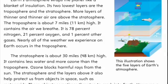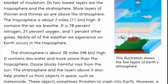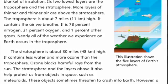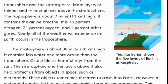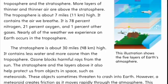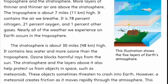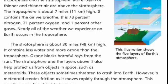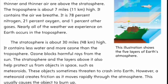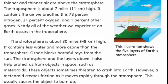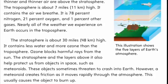The stratosphere is about 30 miles, or 48 kilometers, high. It contains less water and more ozone than the troposphere. Ozone blocks harmful rays from the sun. The stratosphere and the layers above it also help protect us from objects in space, such as meteoroids. These objects sometimes threaten to crash into Earth. However, a meteoroid creates friction as it moves rapidly through the atmosphere, which usually causes the object to burn up.